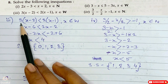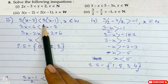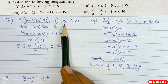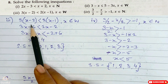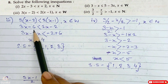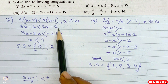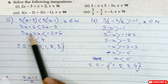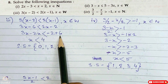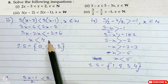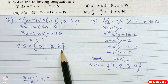Sub-part 3: 3 bracket x minus 2 bracket close less than 2 bracket x minus 1 bracket close, where x belongs to whole number. First we multiply to remove the brackets. So 3x minus 6 less than 2x minus 2. Bringing all x to the left: 3x minus 2x less than minus 2 plus 6. So x is less than 4. Hence our solution set is 0, 1, 2 and 3.